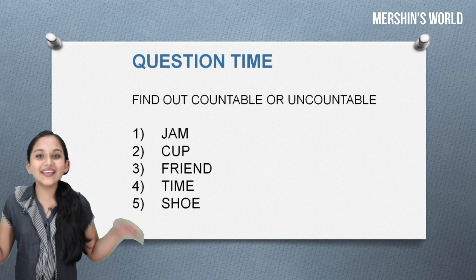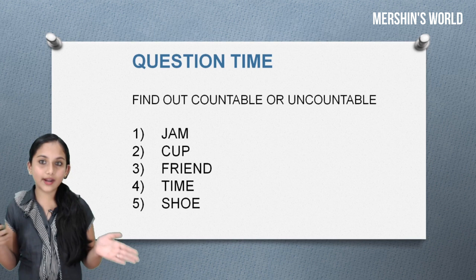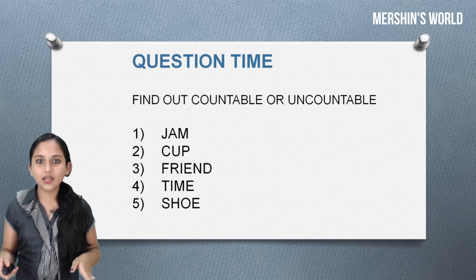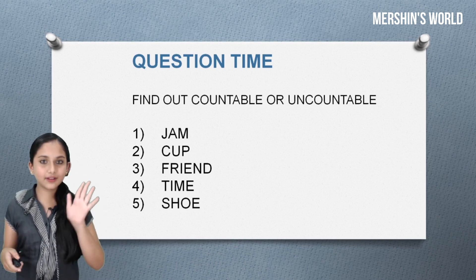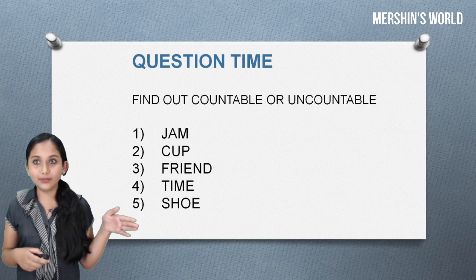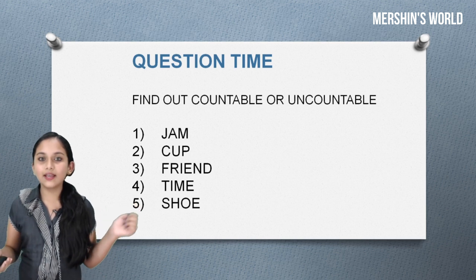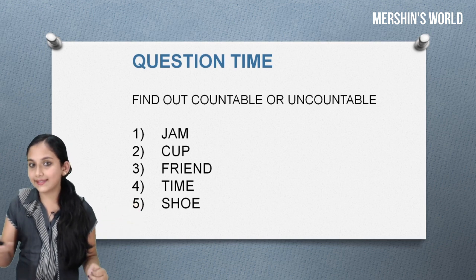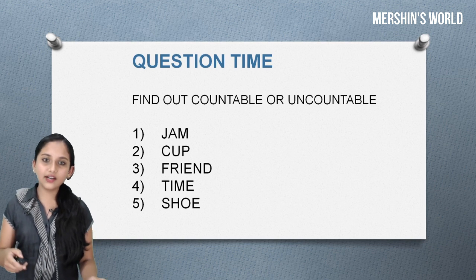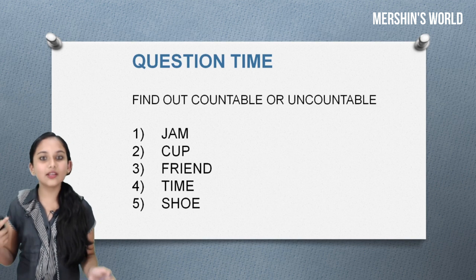Now it's question time. Find out whether the following words are countable or uncountable nouns. I have five words: first is jam, second is cup, third is friend, fourth is time, and the last one is shoe.